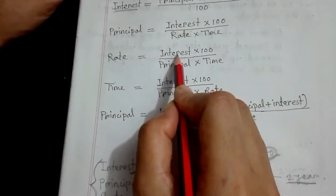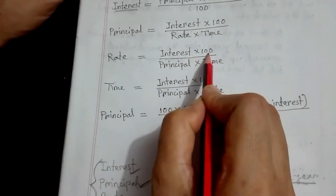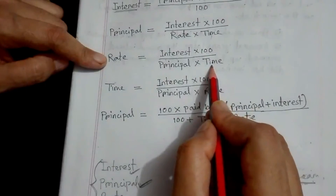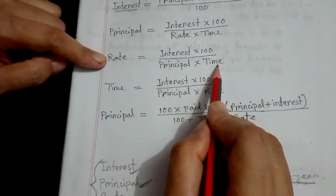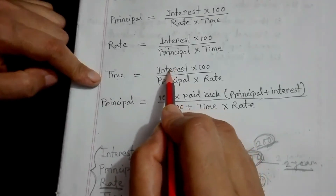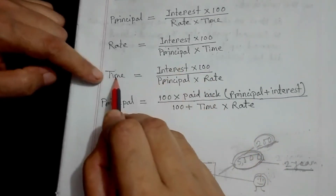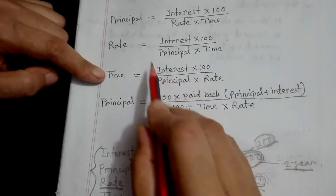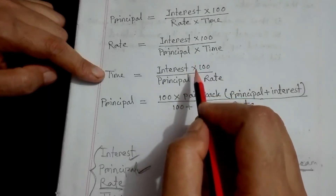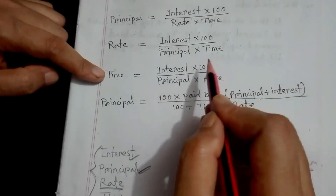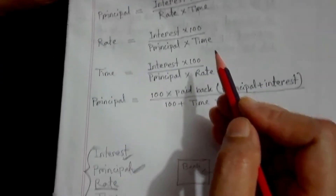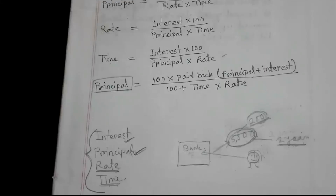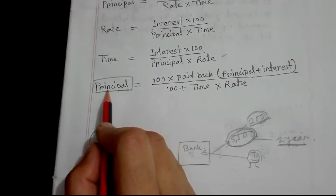As usual, the rate formula is interest into 100, divided by time. The time formula is interest into 100, divided by rate. So, interest, principal, rate, and time — the formula will be known as the principal formula.